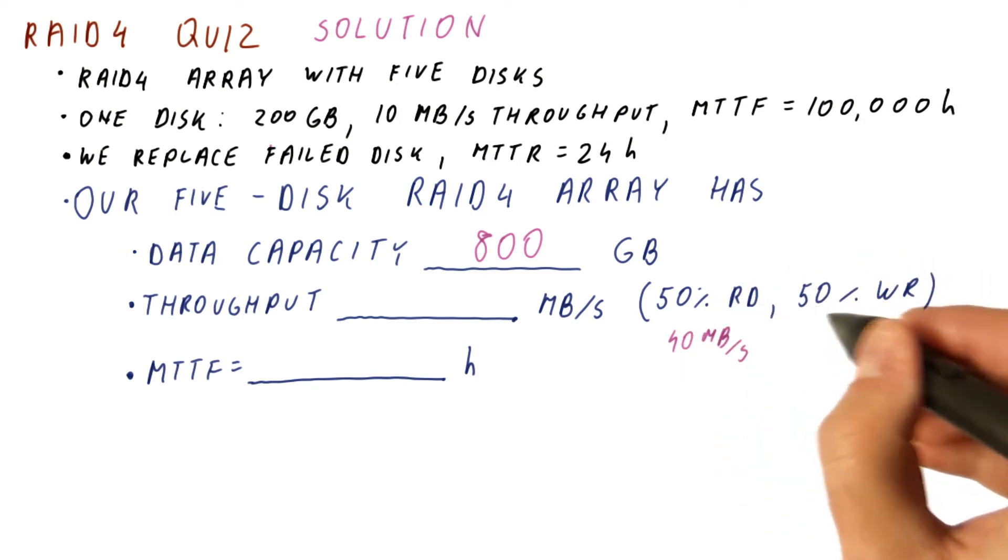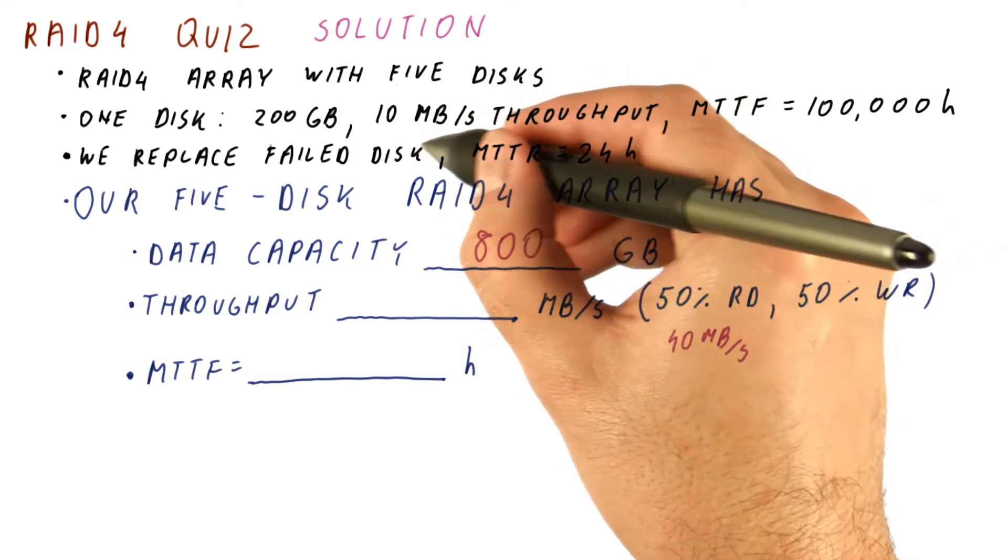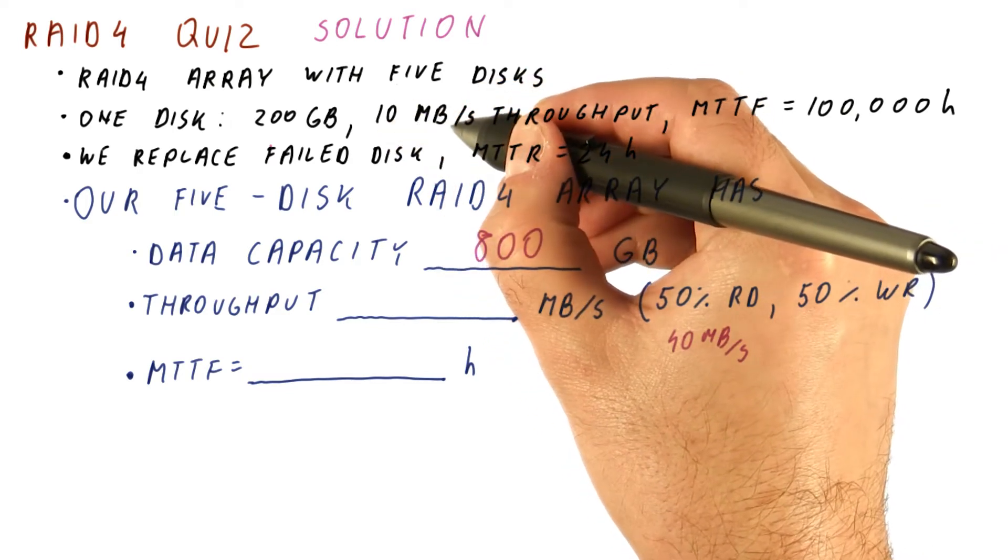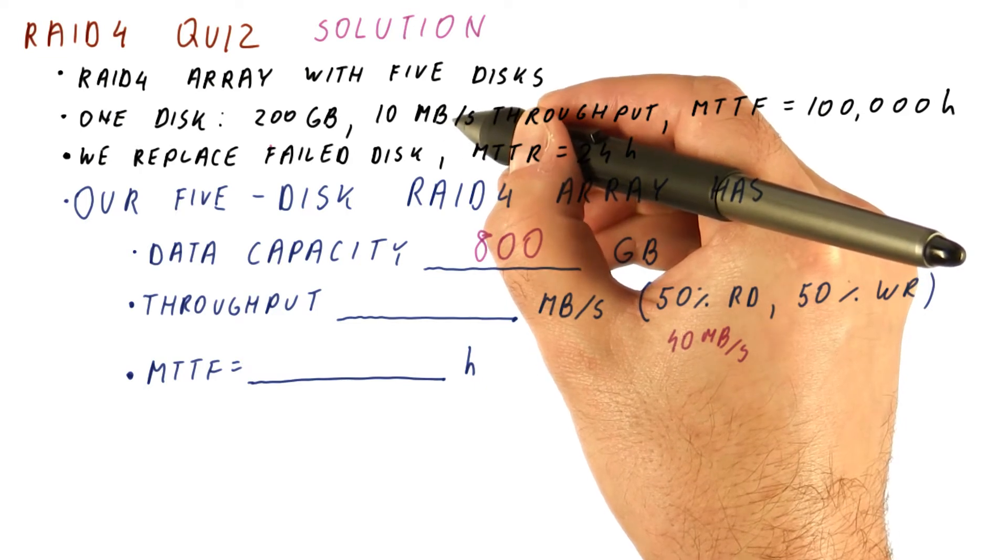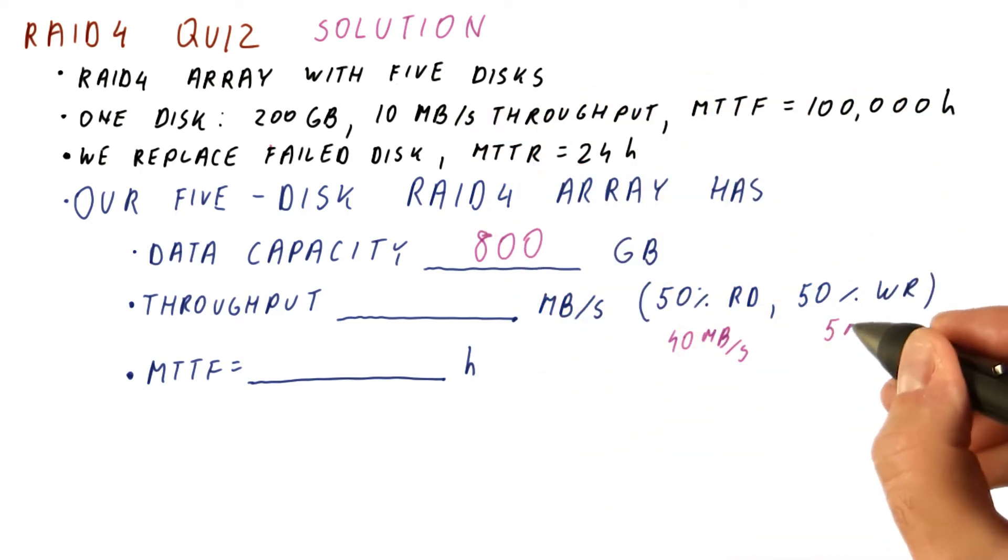But for writes, it's going to be half the throughput of a single disk. And that's because the parity disk needs to be both read and written for every write. So we get five megabytes per second here.